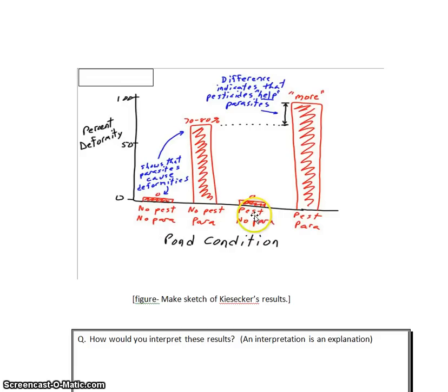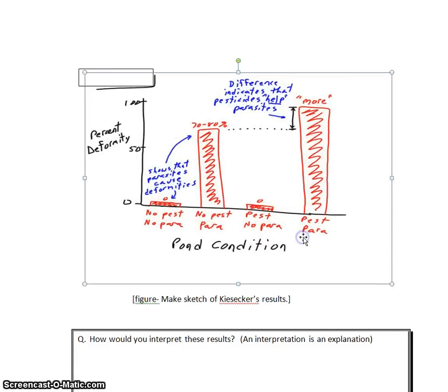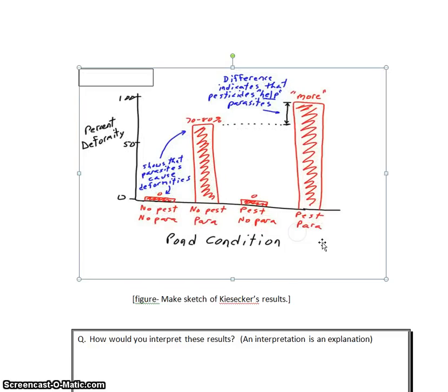But then look at the last column, last bar here. These are the ponds with pesticide and also parasites. So the holes were big enough for the parasites to get through. And this bar is the highest of them all.